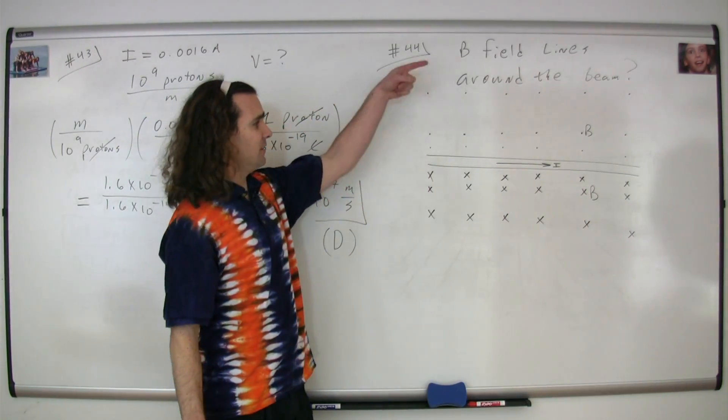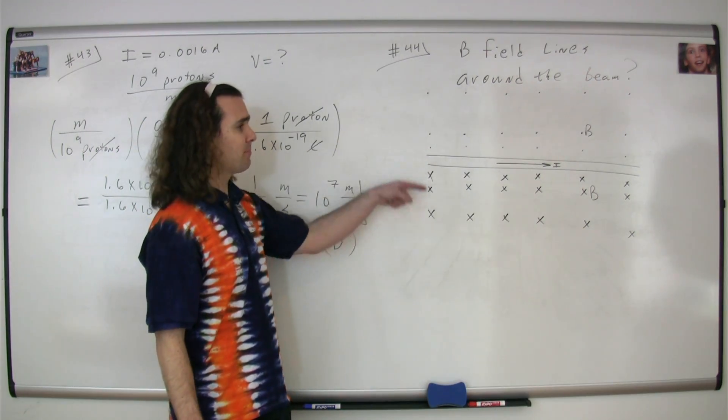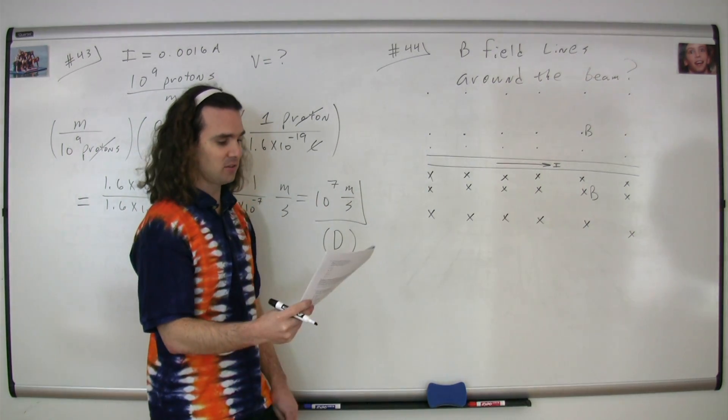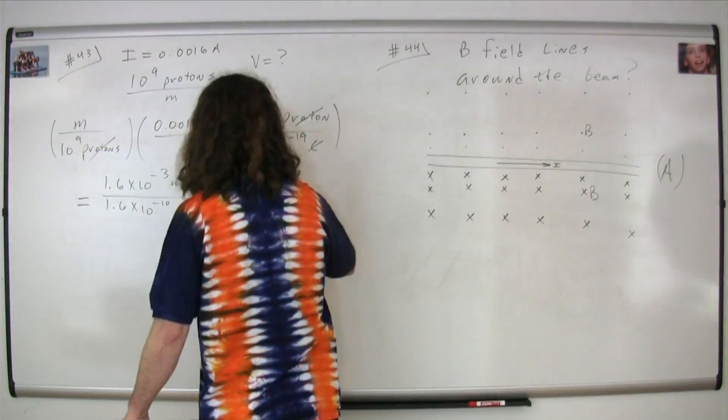In other words, this magnetic field is going like this around our wire or around our beam of protons. And therefore, the correct answer is A, concentric circles around the beam. This is the correct answer.